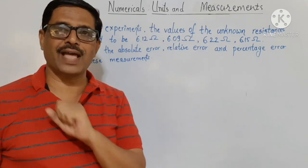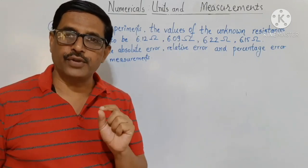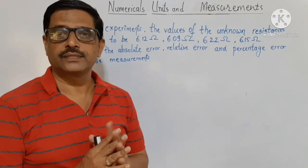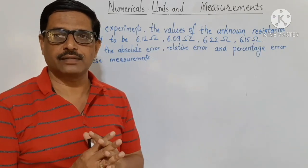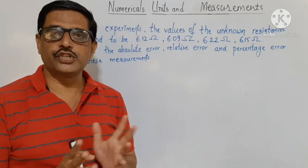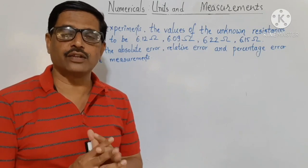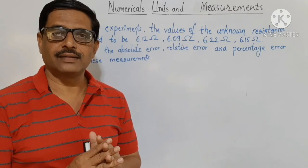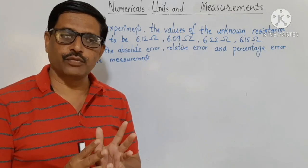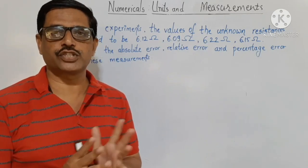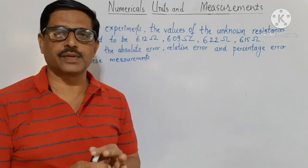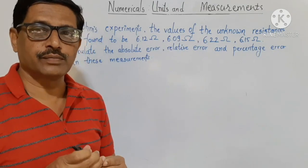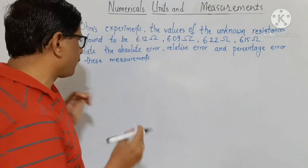The most probable value is supposed to be the true value or real value of the measurement, which is nothing but the mean value. So first we find the mean value of all observations taken.